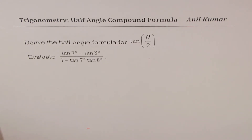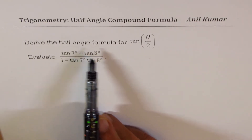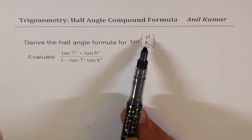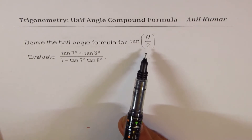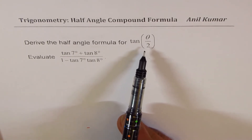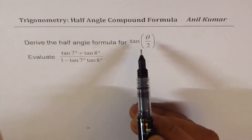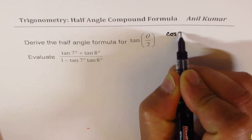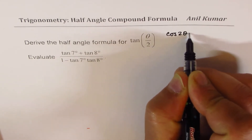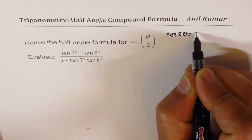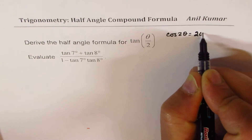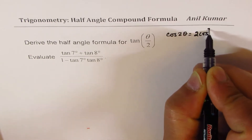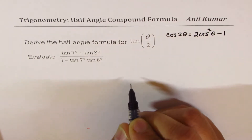For the benefit of some students who do not remember the formulas, let me derive the formula for tan(θ/2). Most of you may remember it. We begin with the cos(2θ) formula, which could be written as 2cos²θ minus 1.